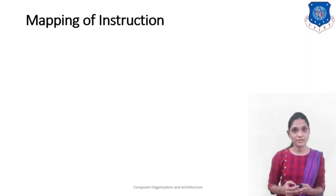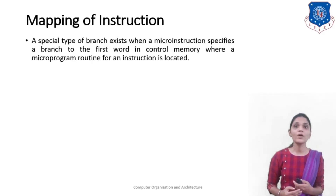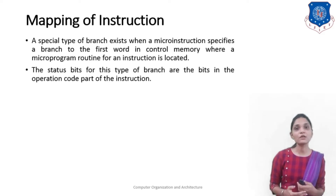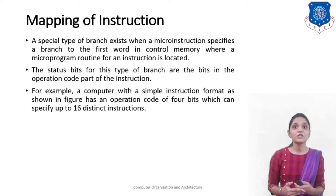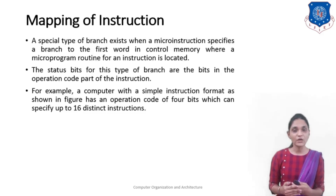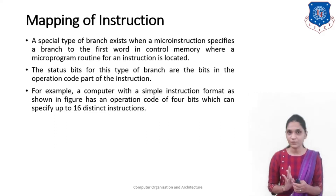Next, we will see the mapping of instructions. A special type of branch exists where the micro instruction specifies a branch to the first word in the control memory where the micro program routine for the instruction is located. The status bits for this branch are the bits in the operation code part of the instruction. For example, a computer with a 4-bit operation code can specify 16 distinct instructions, since 2^4 = 16.